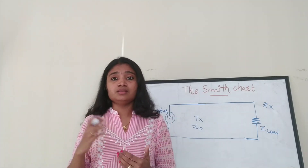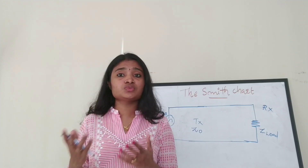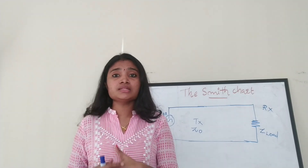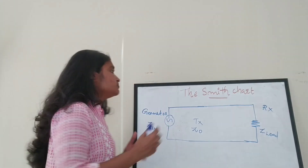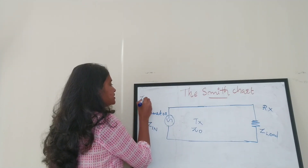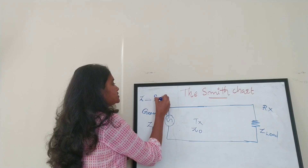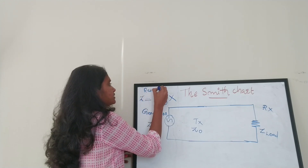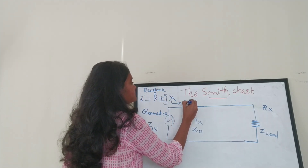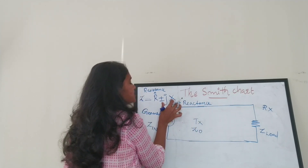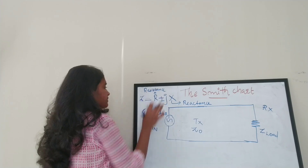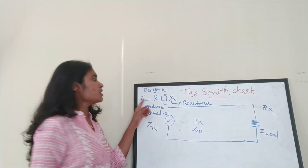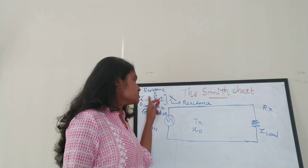What is the difference between resistance and impedance? Resistance has only a real part, but impedance has both a real part and an imaginary part. Impedance Z can be written as Z = R ± jX, where R is the resistance and X is the reactance — the imaginary part.